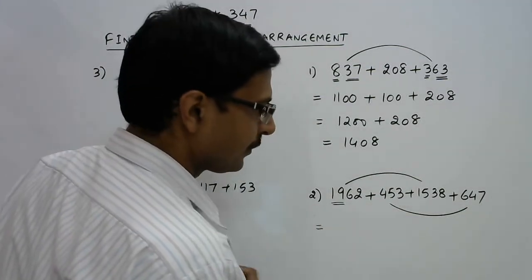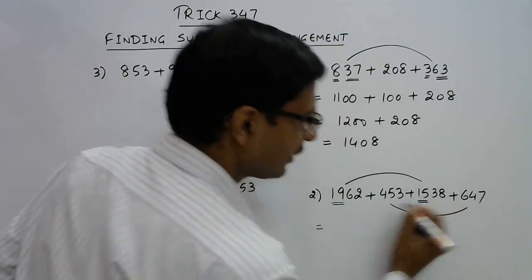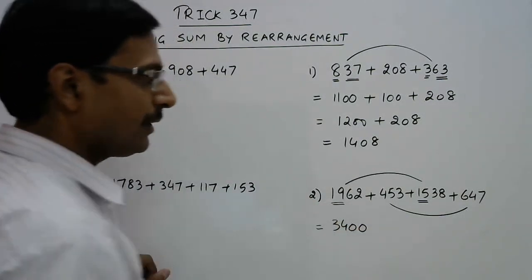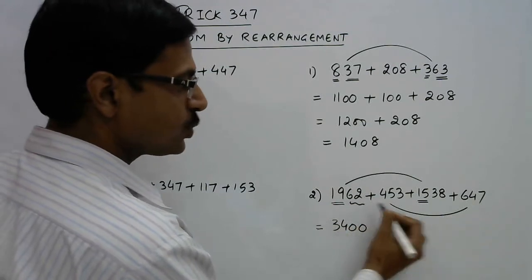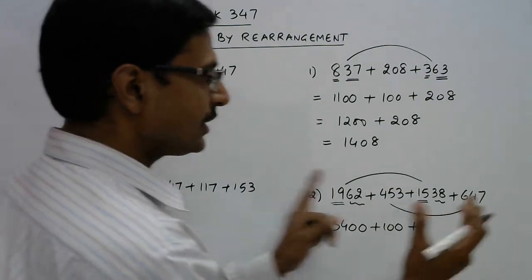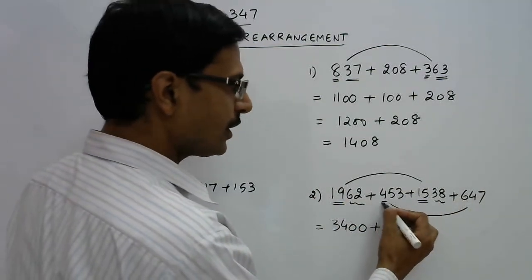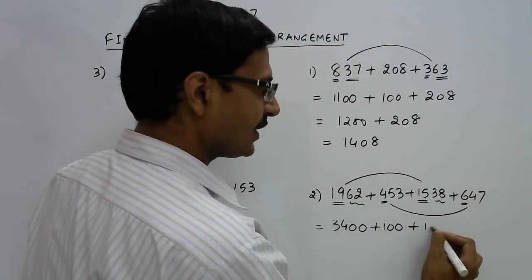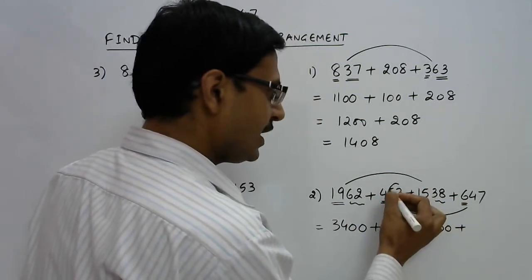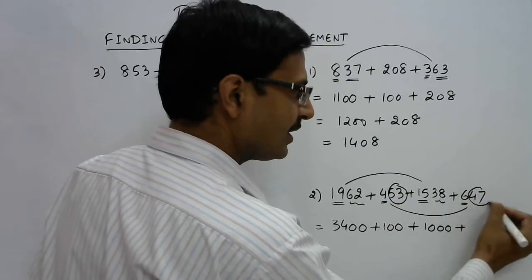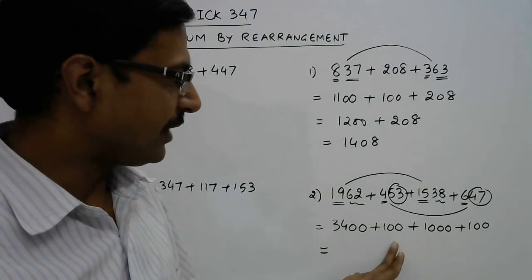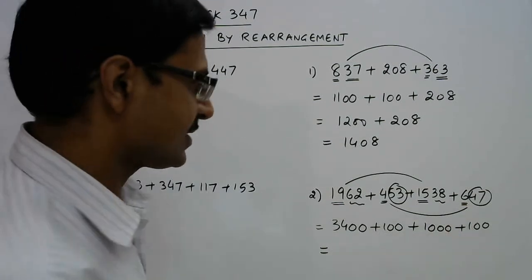Go with the hundreds: 1900 and 1500. 19 plus 15 is 34, so 3400. We're left with 62 and 38, which adds up to 100. The other pair: 400 and 600 is 1000, and 53 and 47 is also 100. So 34, 35, 45, 46 - you have 4600 as the sum.